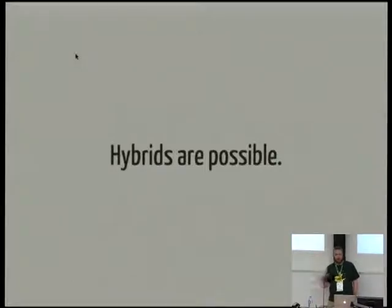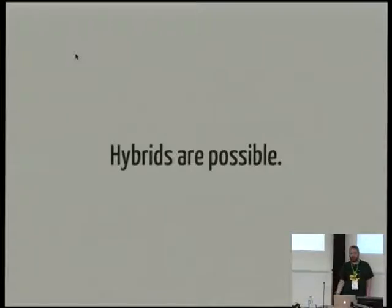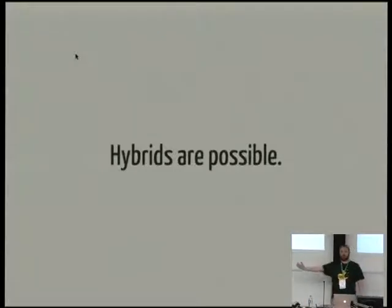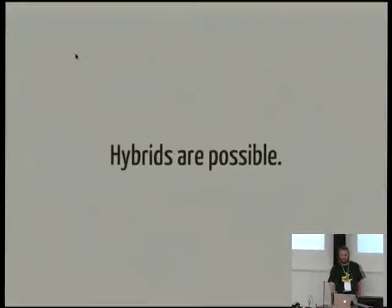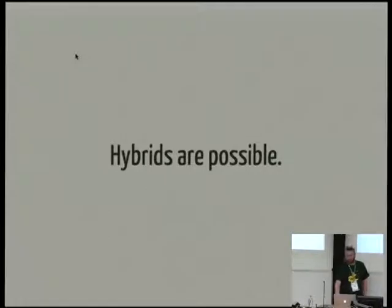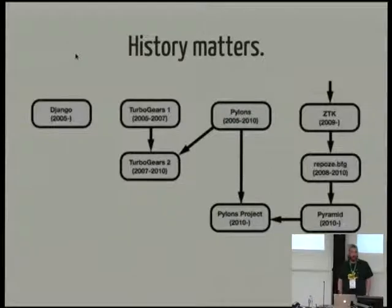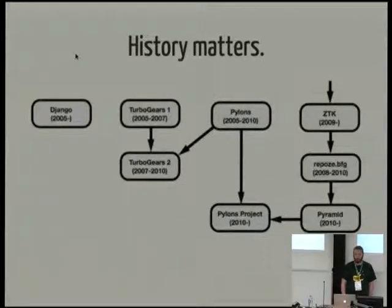The batteries-included versus best-of-breed dichotomy is a massive oversimplification — reality is much more nuanced. Hybrids are possible. It's not hard to imagine a theoretical web framework that provided a routing library and a template library as built-ins, but used a third-party library to access the database. So you've got your own project, you're faced with these decisions, and you can take the middle ground. Sometimes, as an important point from the Django perspective, you don't pick an approach — the approach picks you.